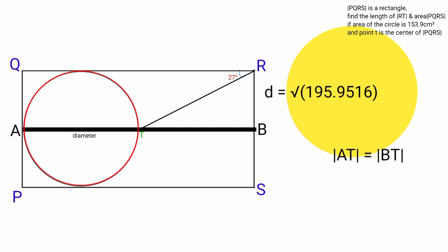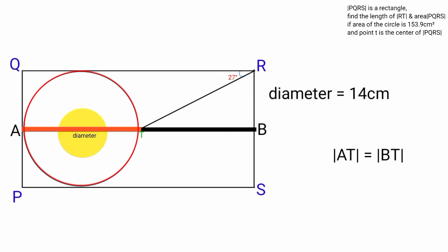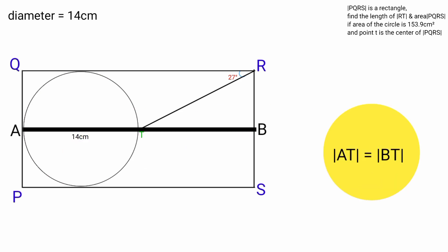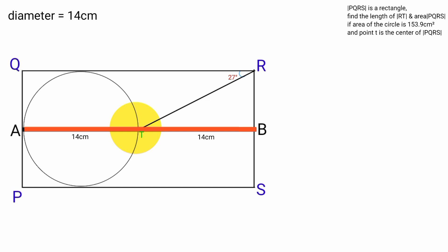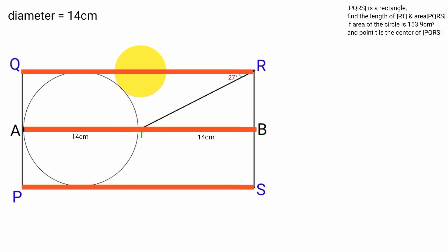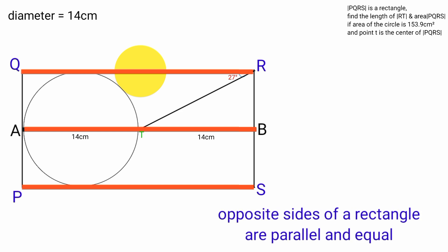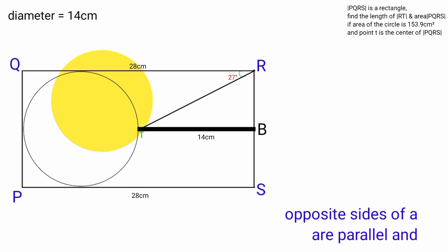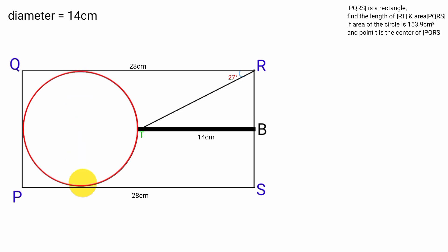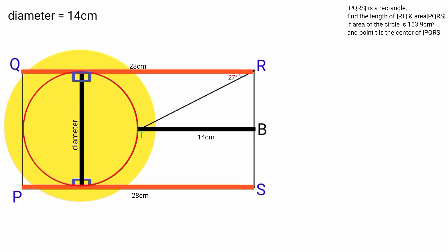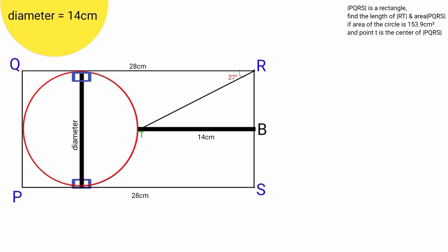Since line AT equals line BT, this is also 14 cm. Because this side is parallel to side PS of the rectangle, and opposite sides of a rectangle are parallel and equal, this side equals 14 plus 14 equals 28 cm. Drawing a line parallel to PQ through T, this line is also a diameter perpendicular to two tangents, so it is also 14 cm, making these sides 14 cm each.